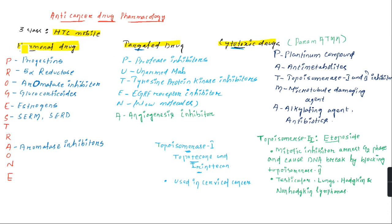Let us discuss hormonal drugs. Hormonal drugs can be remembered by the mnemonic PROGESS: P for progestins, R for 5-alpha reductase inhibitors, O for aromatase inhibitors, G for glucocorticoids, E for estrogens, S for selective estrogen receptor modulators and selective estrogen receptor down-regulators.